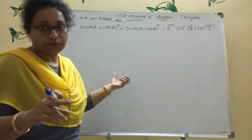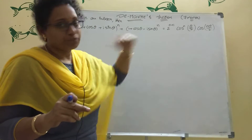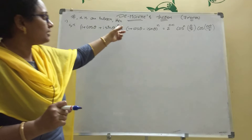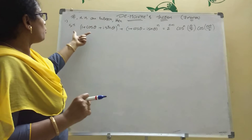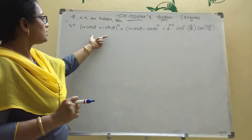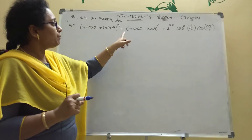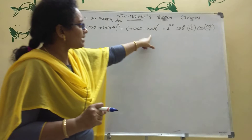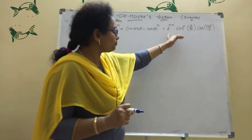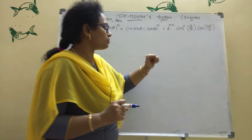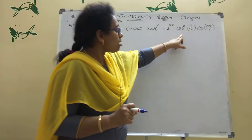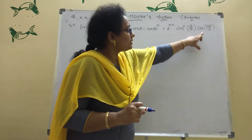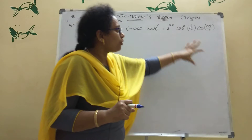This is a seven marks problem. If n is an integer, then prove that (1 + cosθ + i·sinθ)^n + (1 + cosθ − i·sinθ)^n equals 2^(n+1) · cos^n(θ/2) · cos(nθ/2).